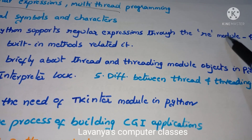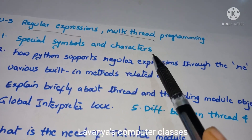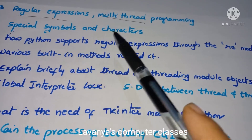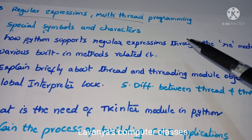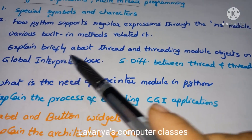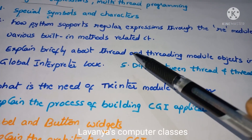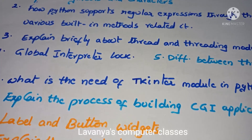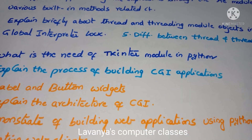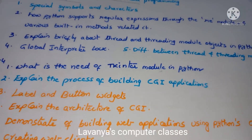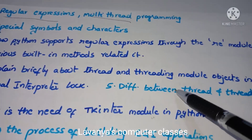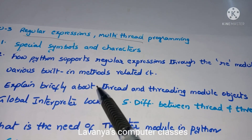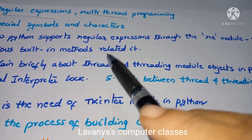Next question: explain briefly about threads and the threading module objects in Python, or the difference between thread and threading module. Also, what is the Global Interpreter Lock (GIL)? What is the need of the Tkinter module in Python? This is an important question — concentrate on the Tkinter module. So Unit 3 covers: regular expressions (symbols, characters, built-in methods), threads, threading module, and the Global Interpreter Lock.